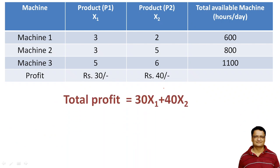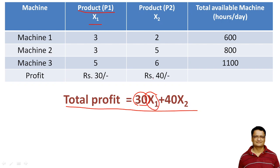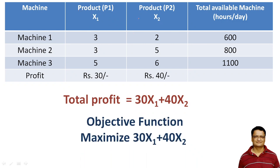The total profit can be represented as: 30 is the profit in rupees for every kilogram of P1, and x1 is the quantity to be produced, so 30x1 is the profit from P1. Similarly, 40x2 is the profit from product P2. This becomes our objective function, and we wish to maximize it.